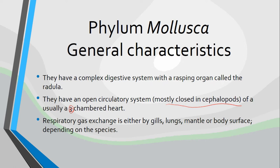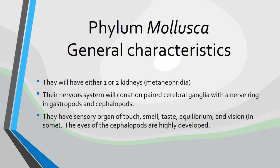Respiratory gas exchange is either by gills in the aquatic organisms, lungs for some of the terrestrial molluscs, or on the mantle or body surface — some of them are actually able to dissolve oxygen just from the surface of their body, depending on the species in question. They will have either one or two of an organ called the metanephridia, which acts as their kidney, filtering out nitrogenous waste from their bodies.